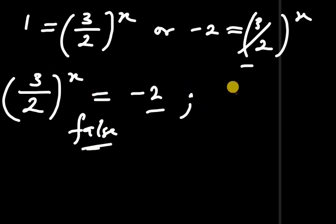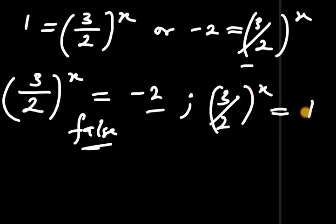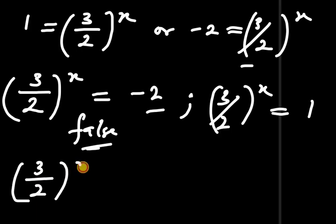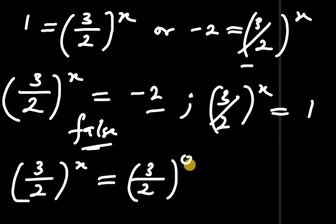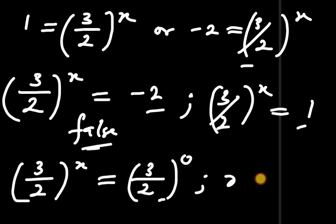Considering p equals to 1: we have 3 divided by 2 all to the power of x equals to 1. We can write 1 as 3 divided by 2 all to the power of 0, because any number raised to the power of 0 equals 1. Since the bases are the same, equating the exponents gives us x equals to 0. This is the solution.